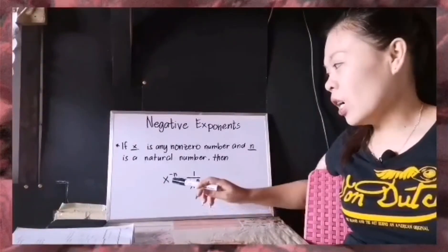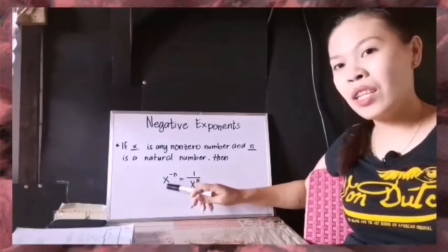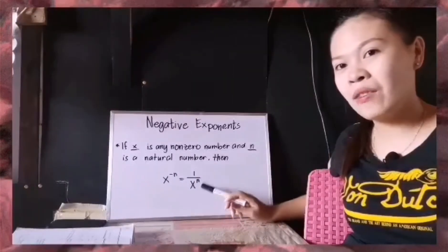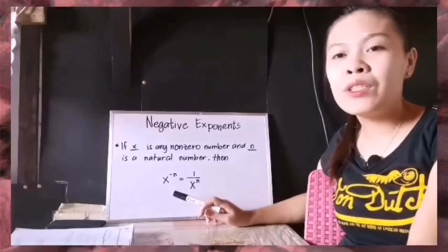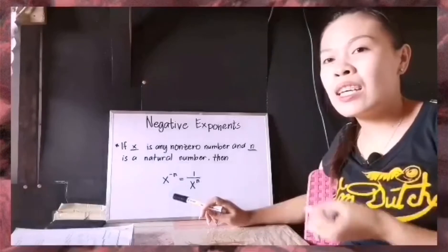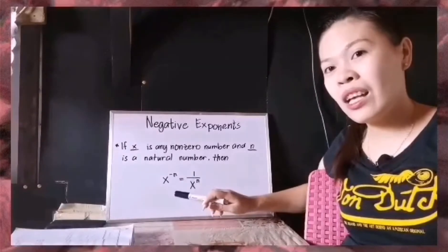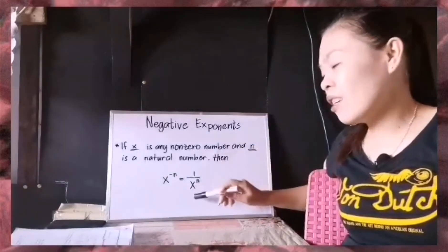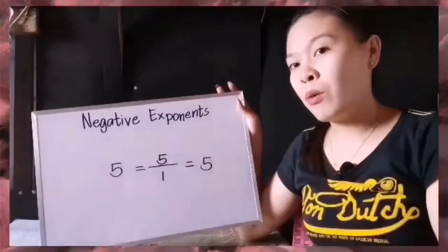So in this case, Matlovers, you have noticed that here on this first side, we have X being raised to negative N, and it has been equated to 1 over X to the power of positive N. We do not want negativities, we do not want problems. So we have to make things right and change everything that is negative to positive. That's what is happening in this formula — changing a negative exponent to a positive exponent.